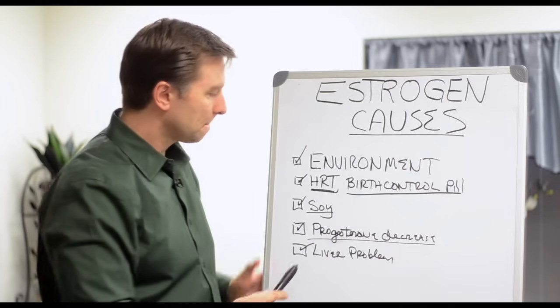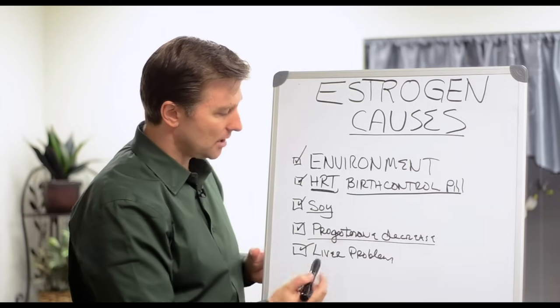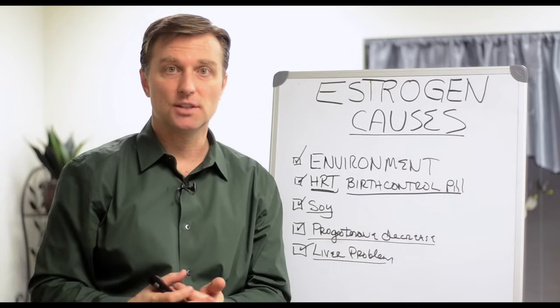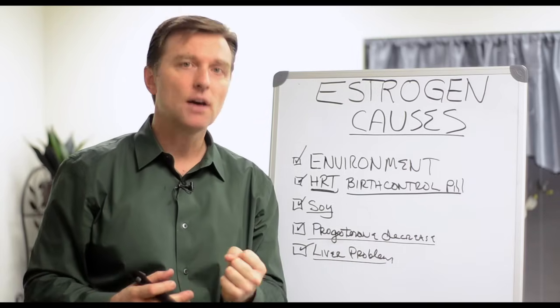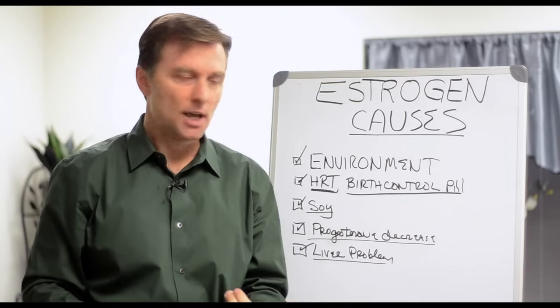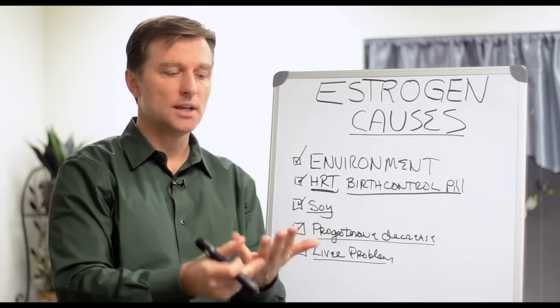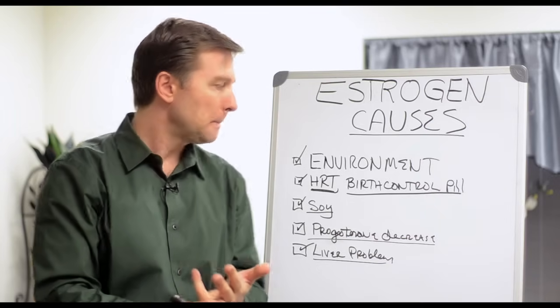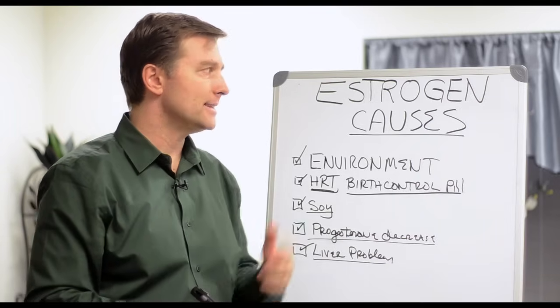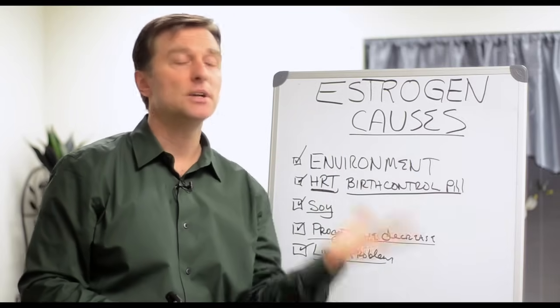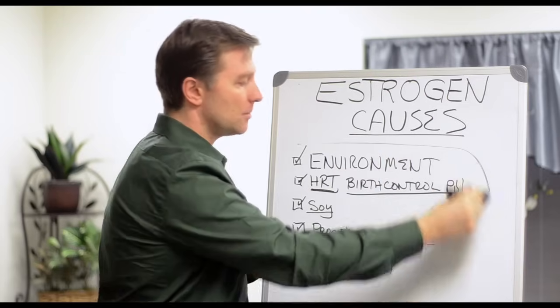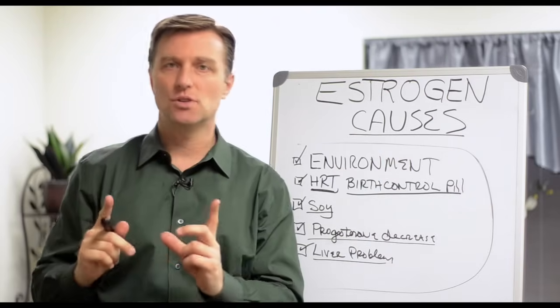And so we also have liver problems. Now, the liver is where you actually detoxify estrogen. So if that liver is healthy, you can get rid of a lot of this extra estrogen. But if you're starting to get constipation and gallbladder problems and liver toxicity because your diet's really poor, you're not going to be able to break down this excess estrogen. And that could be another culprit to estrogen dominance.